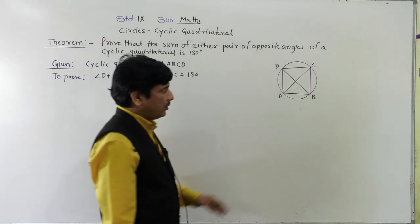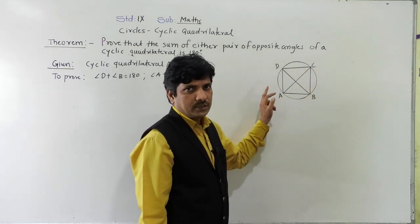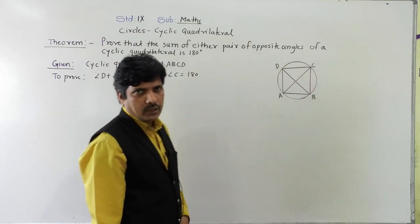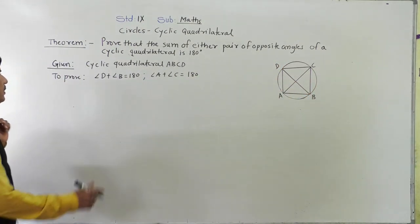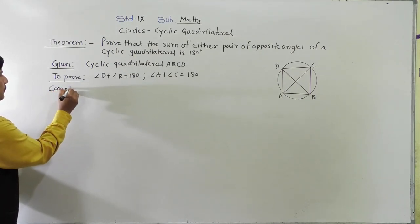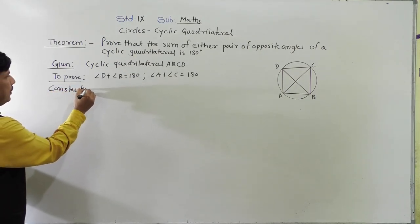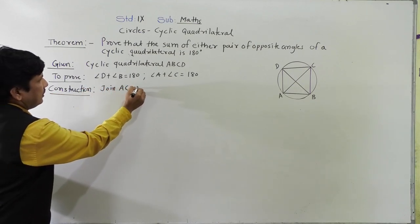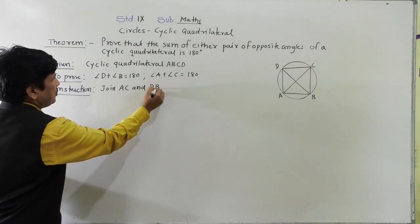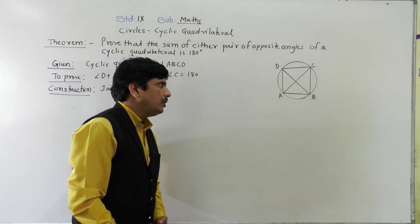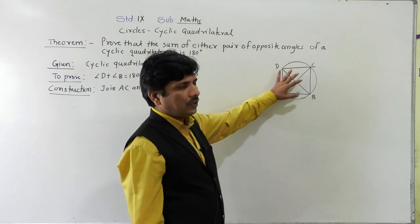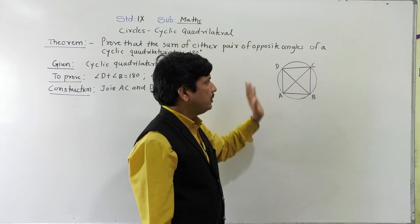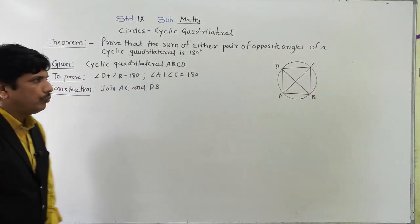Construction has already been done. Only the quadrilateral was given; the construction I have done is: join AC and DB, which are the diagonals of this quadrilateral. So AC and DB are the diagonals of this cyclic quadrilateral. With the help of these, we are going to give the proof.